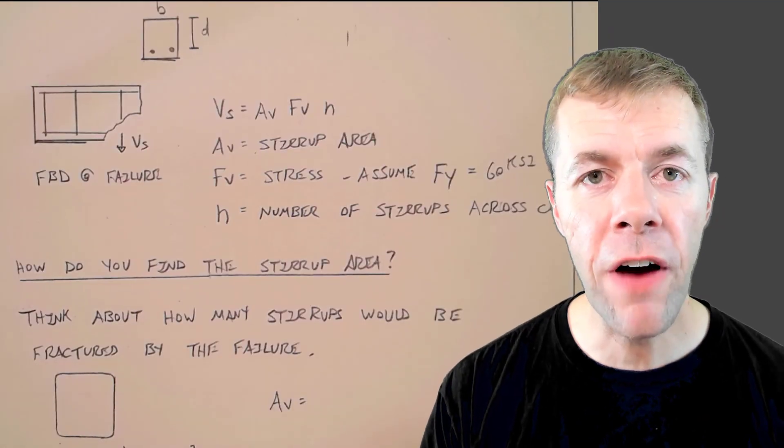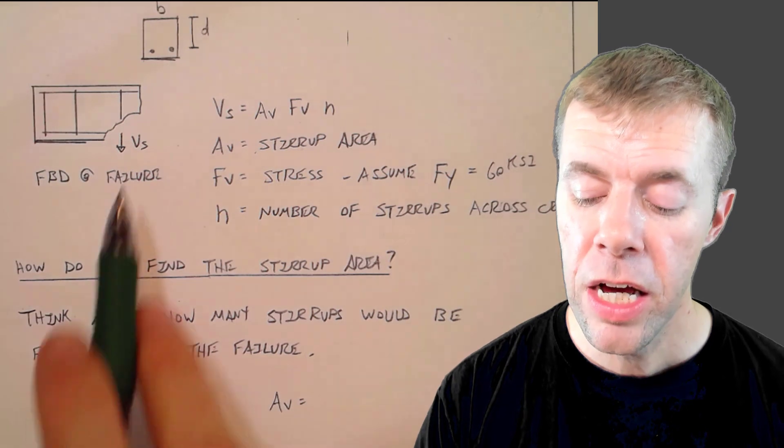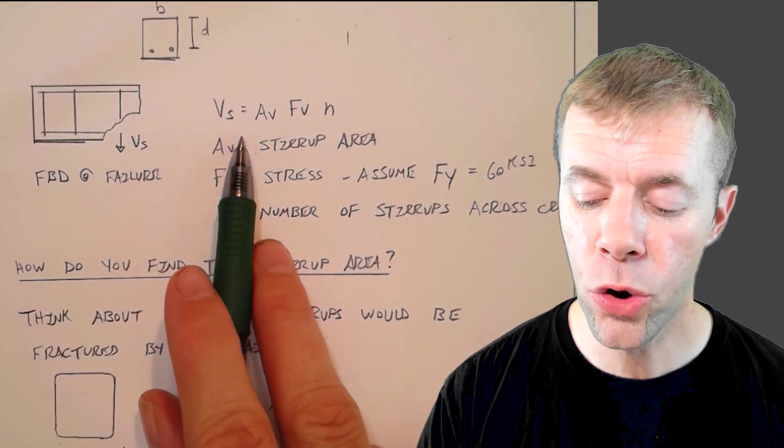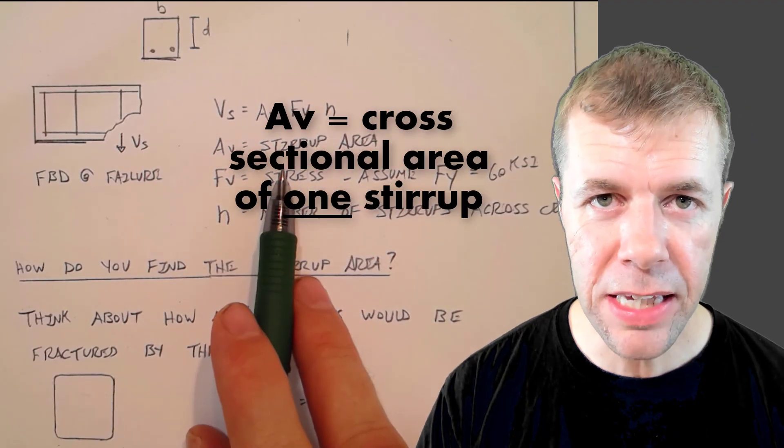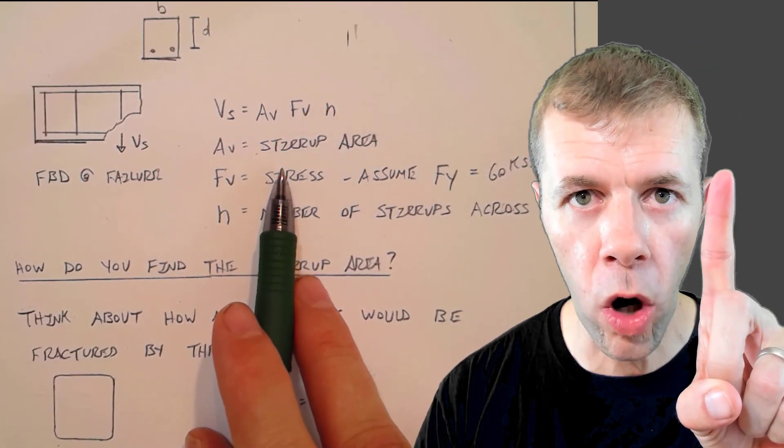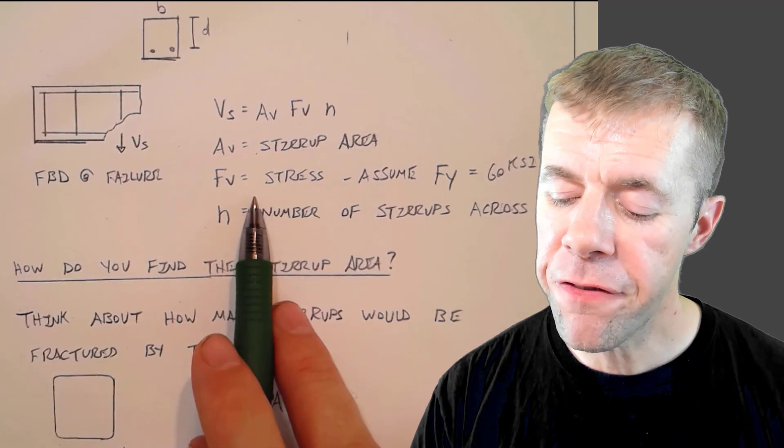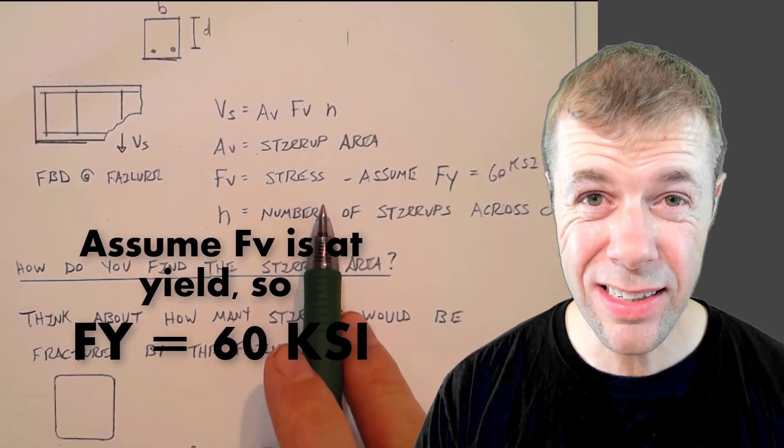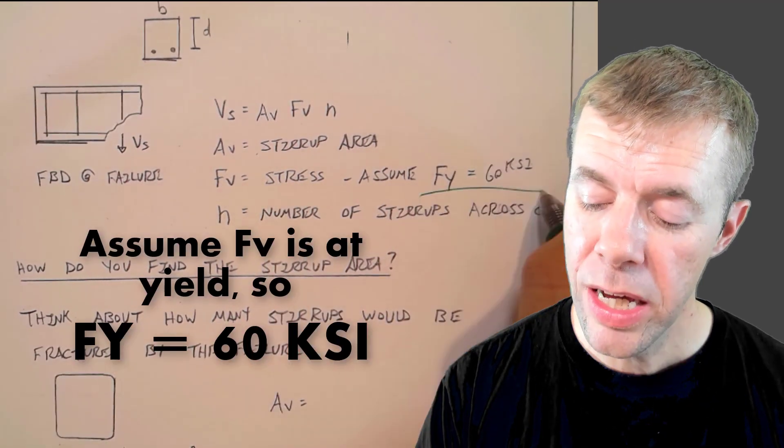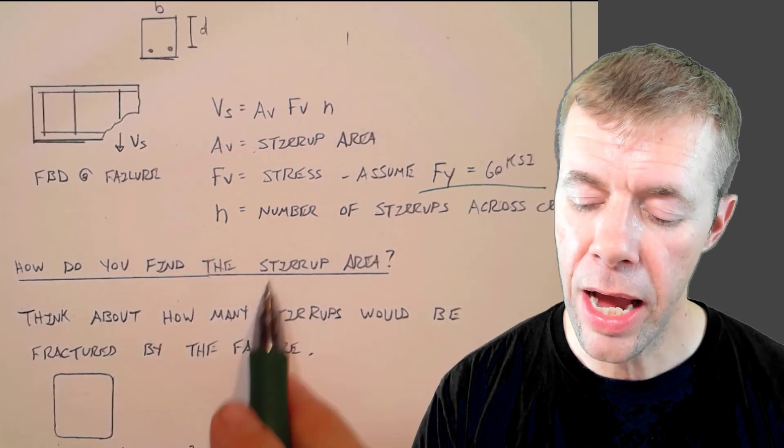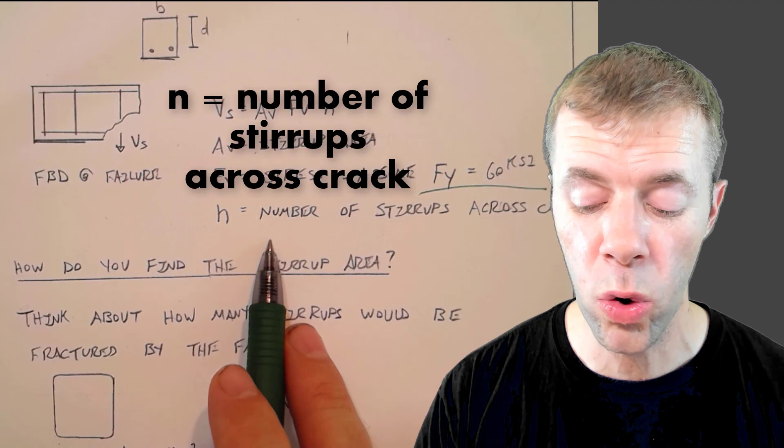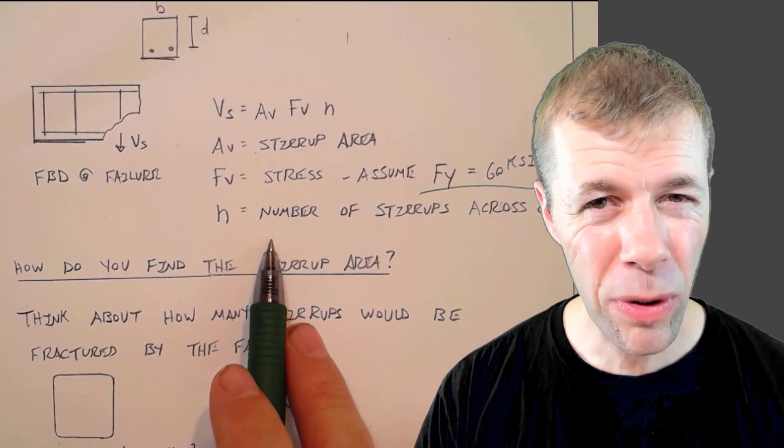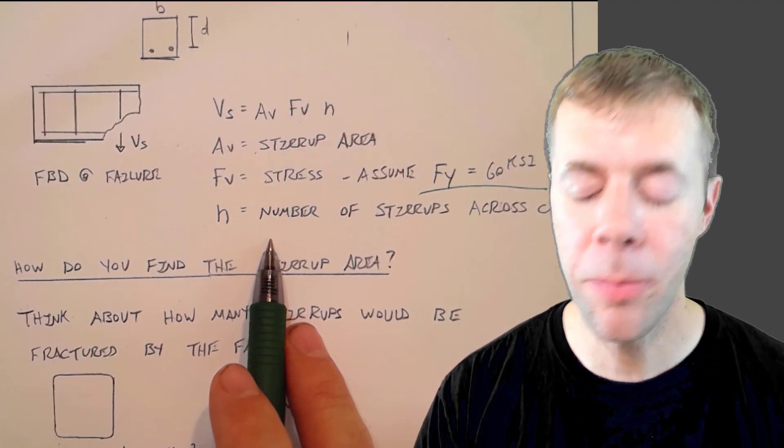Now if I go to find the contribution from the shear stirrups, V sub S, I'm going to use this equation, AV, FV, N. AV is the area of a stirrup, the area of one stirrup. FV is the stress inside the stirrup, and we're going to assume it's at yield, 60 KSI. And N is the number of stirrups that cross the crack. How are we going to figure this stuff out? Well, let's talk about it.